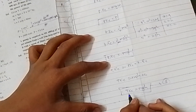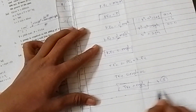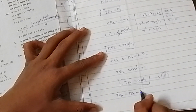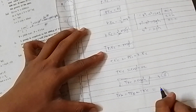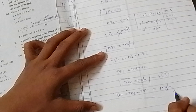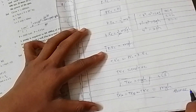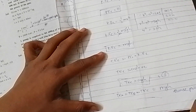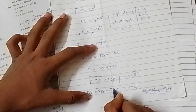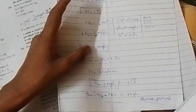Now, according to the law of conservation of energy in case of freely falling bodies, we can write that TE at A equals TE at B equals TE at C equals mgh. Hence proved. This is our law of conservation of energy in case of freely falling bodies.